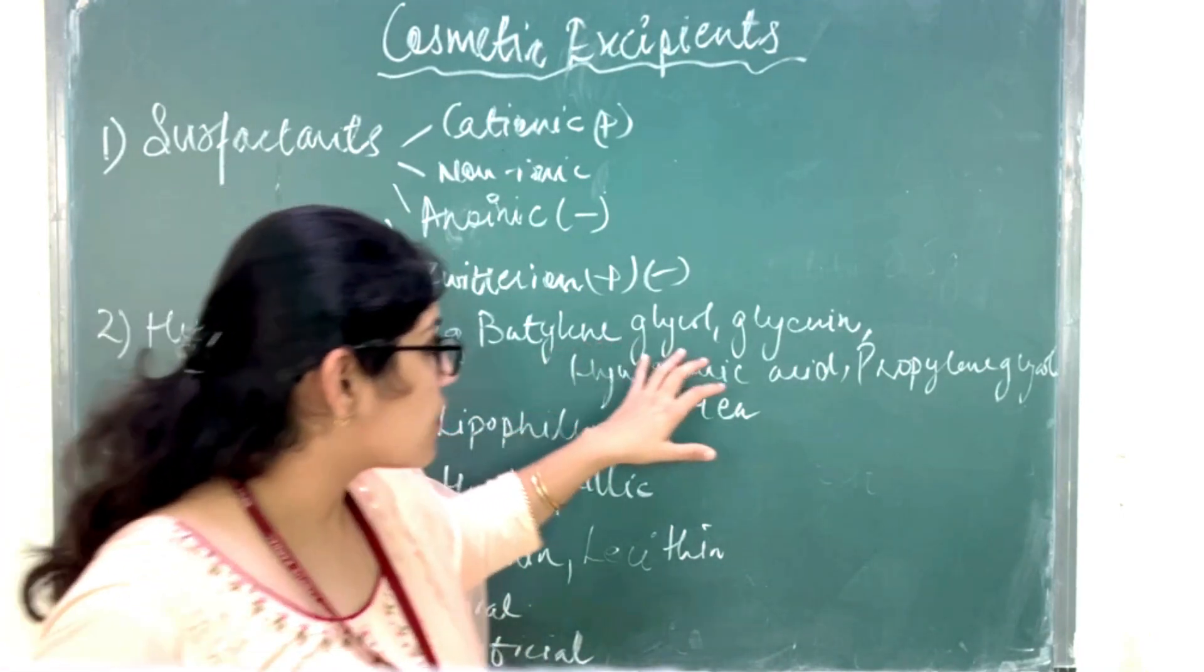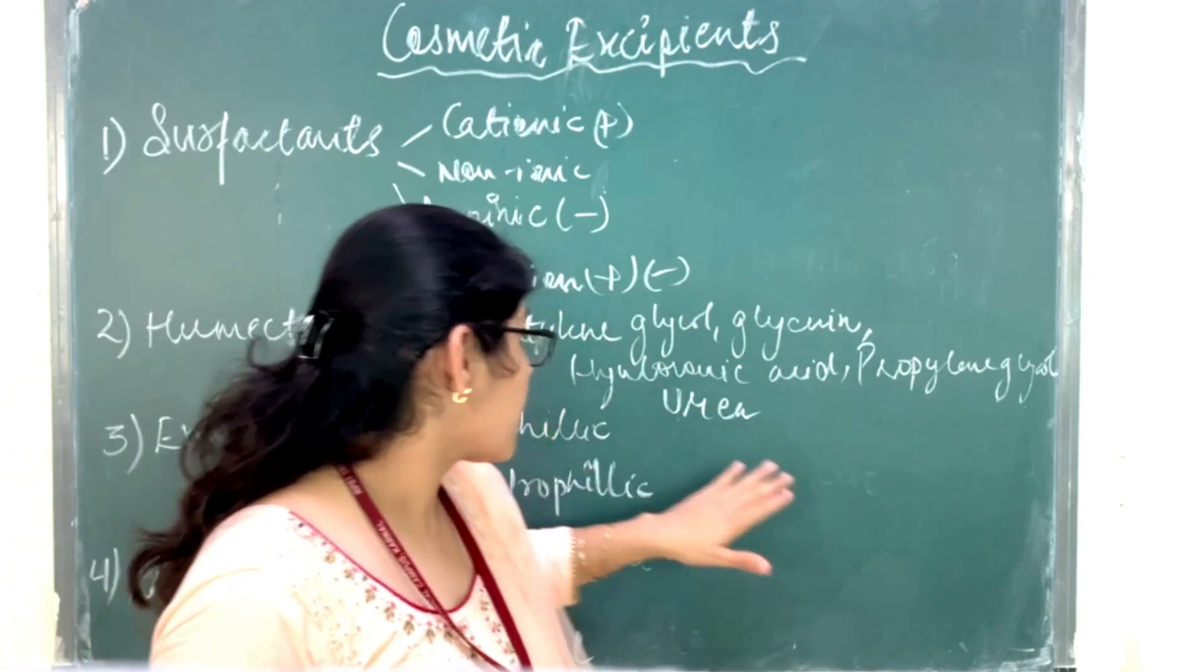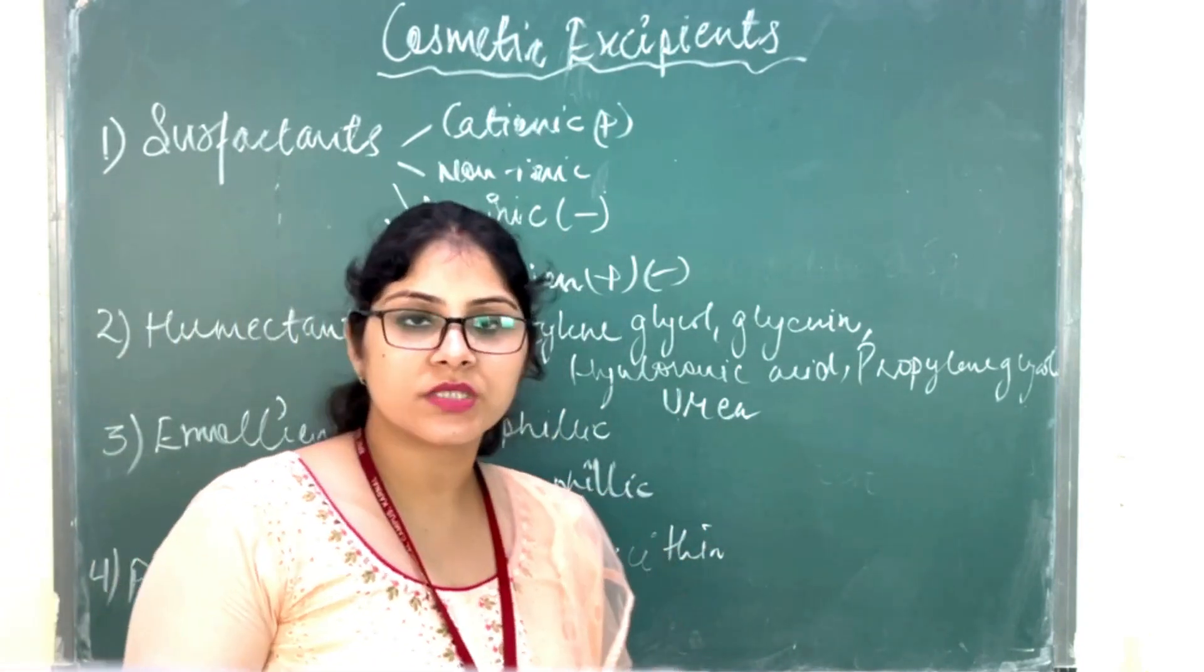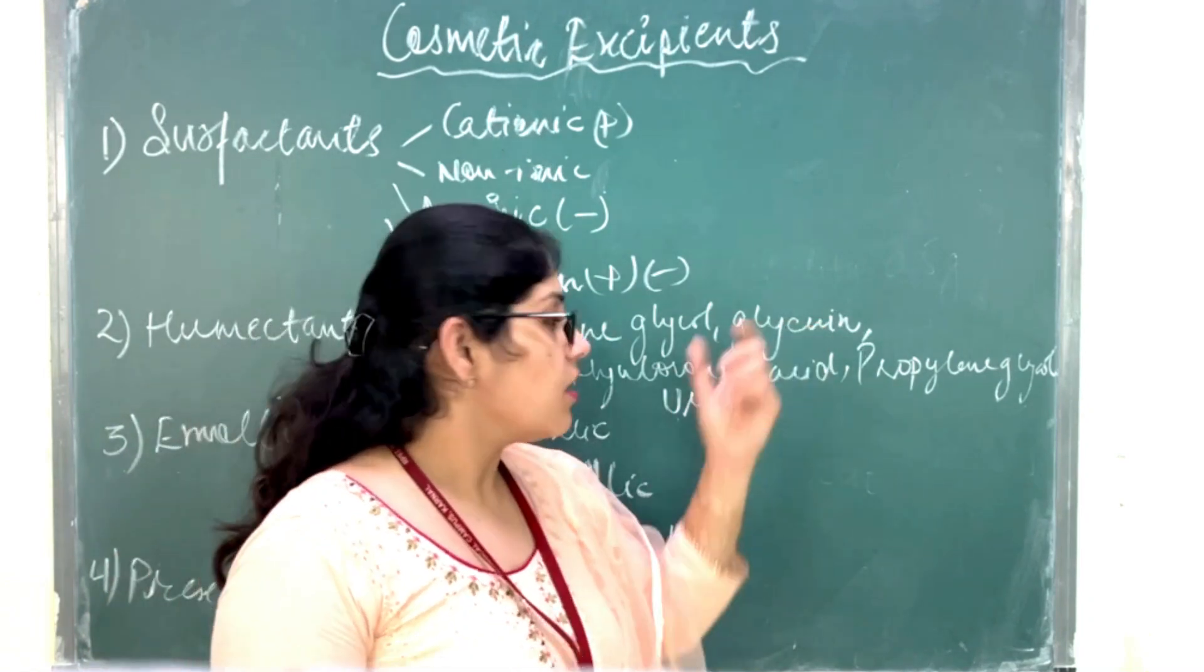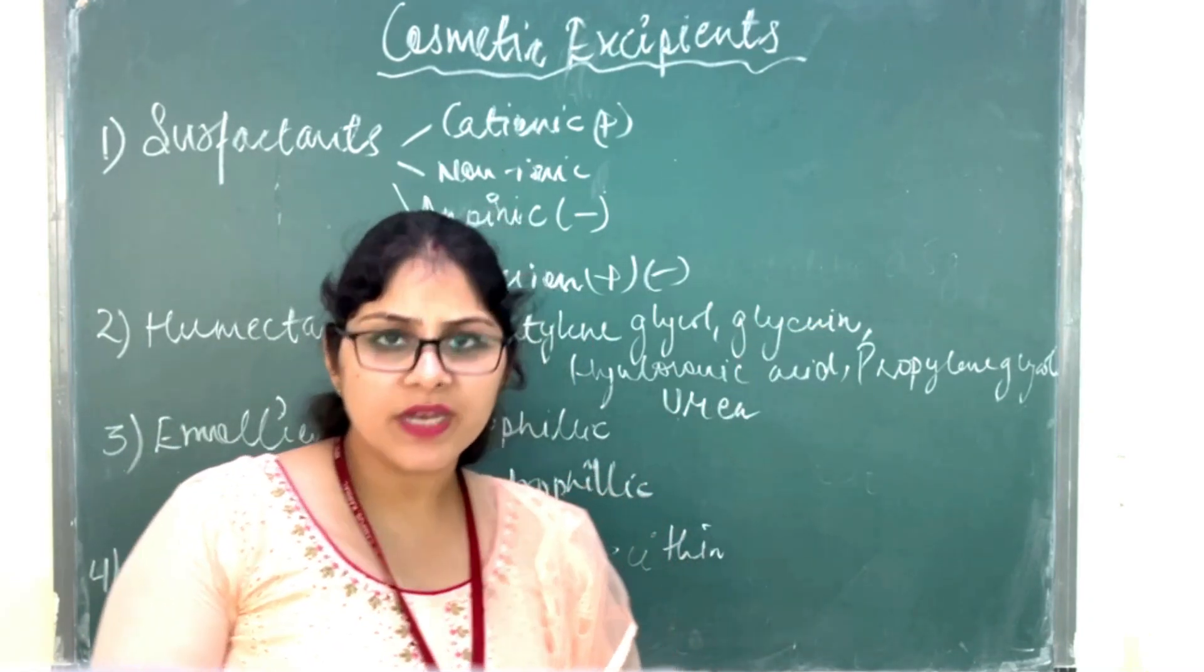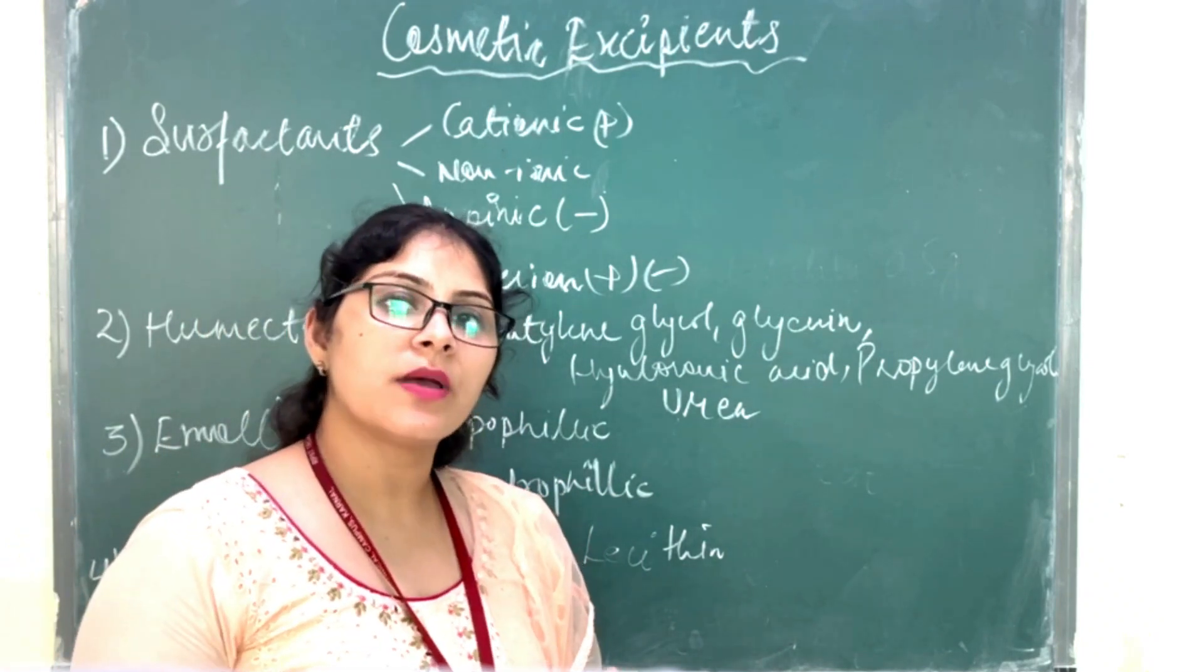For example, glycerin, hyaluronic acid, propylene glycol, these all are used as humectants for the formulation. Like glycerin, they also act as a lubricant and have the capacity to absorb the water.